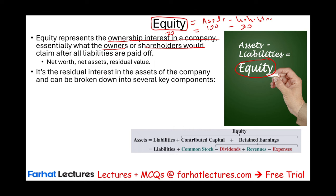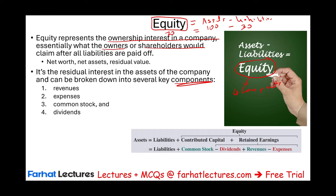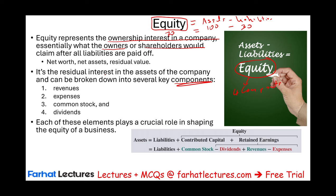Equity can be broken down into several key components. For financial accounting, you need to learn about four components of equity. We're going to list them first, then explain each one separately. The four components are revenues, expenses, common stock, and dividend. We're going to define each one. Each of these elements plays a crucial role in shaping the equity of the business.